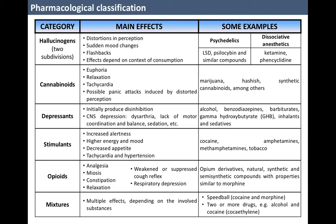Cannabinoids produce euphoria, relaxation, slow reaction time to stimuli, increased heartbeat rate, and appetite. They may also produce distortions in perception and induce panic attacks. This group includes natural, synthetic, and semi-synthetic compounds derived from the varieties of cannabis plants. Cannabinoids include marijuana, hashish, and synthetic cannabinoids.